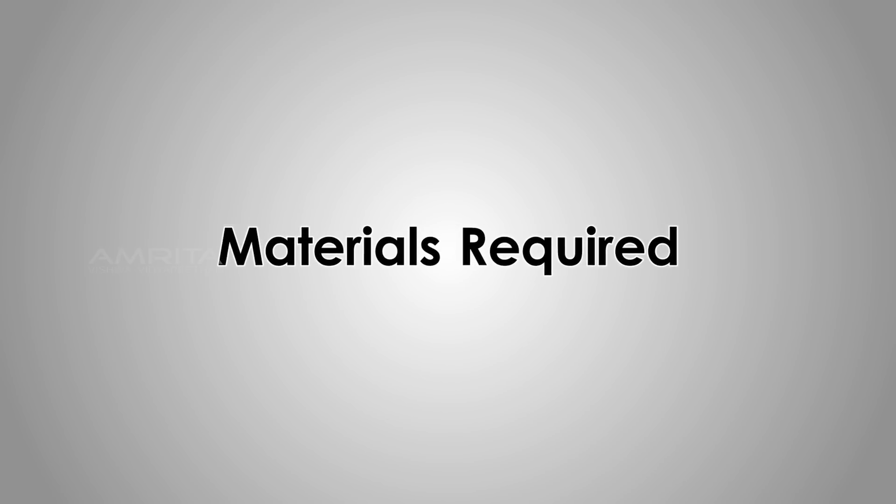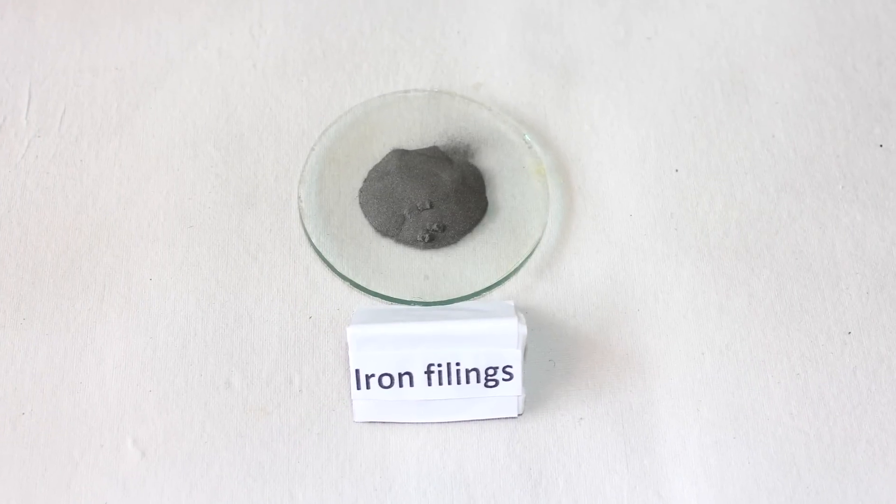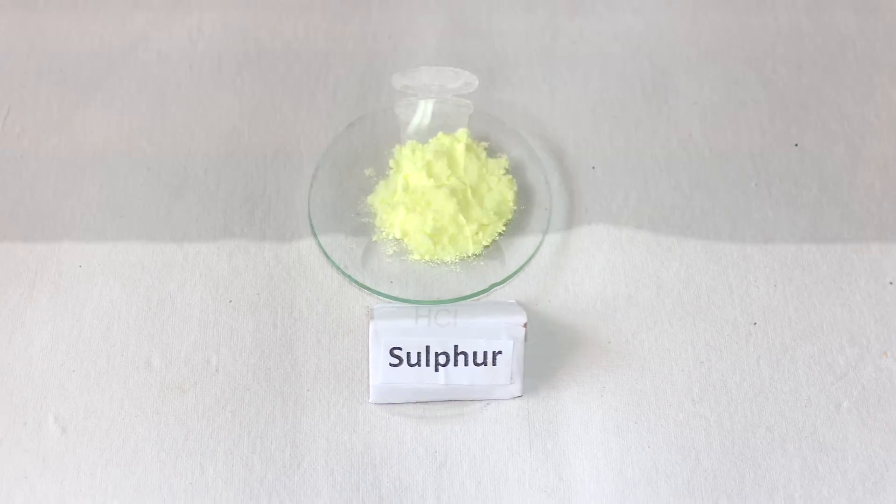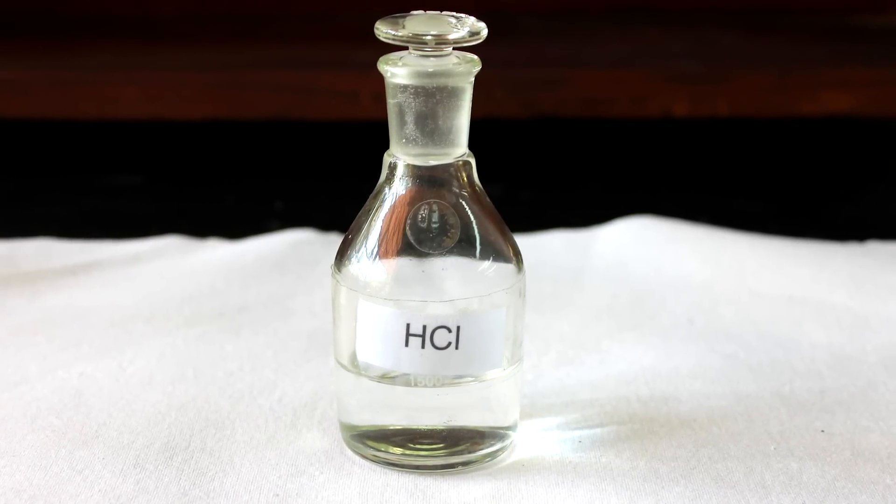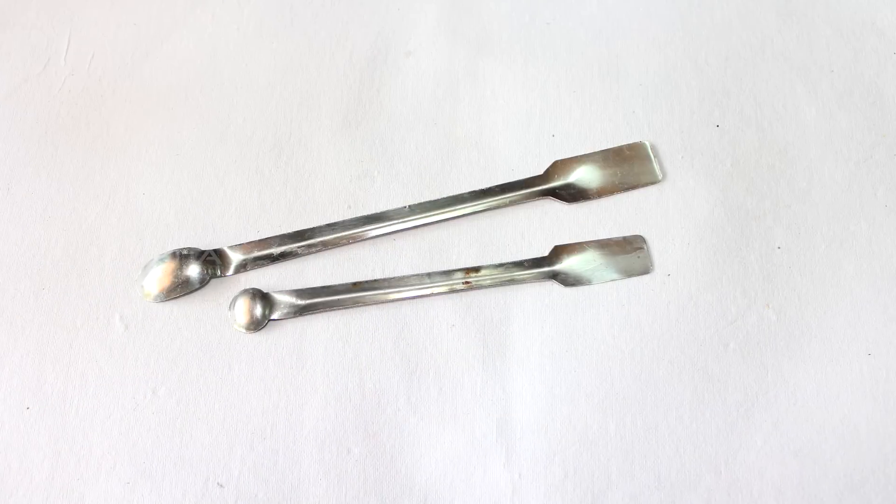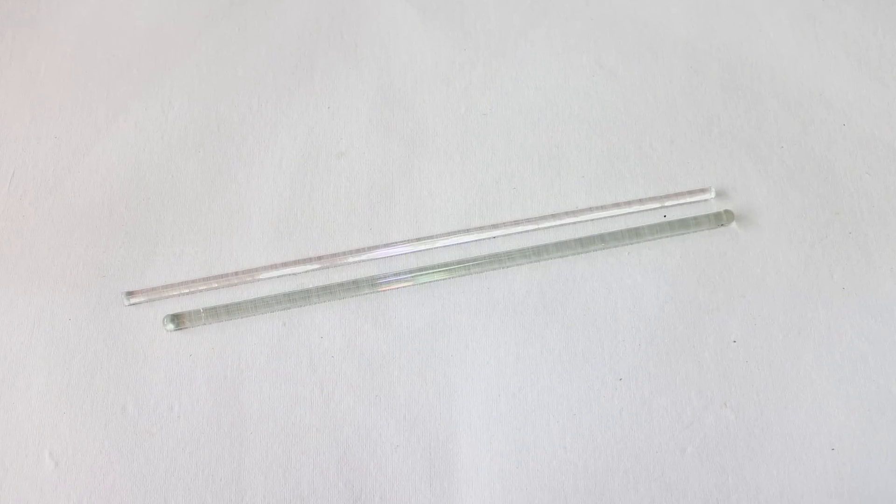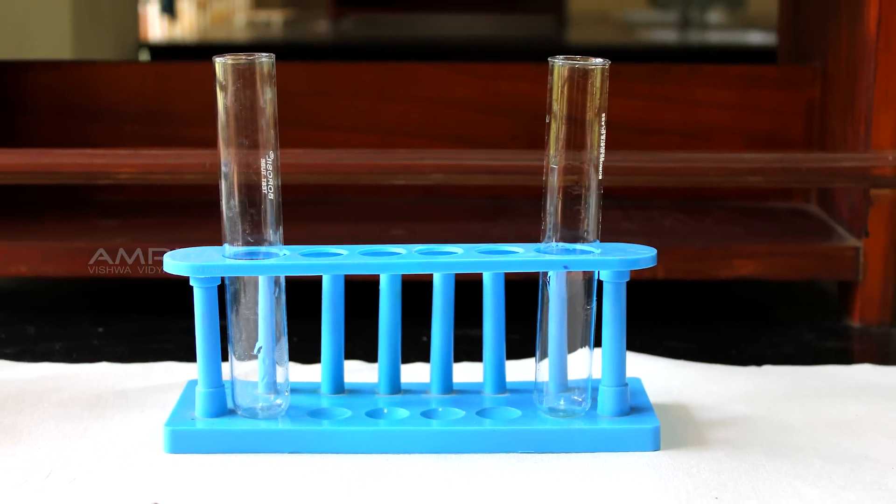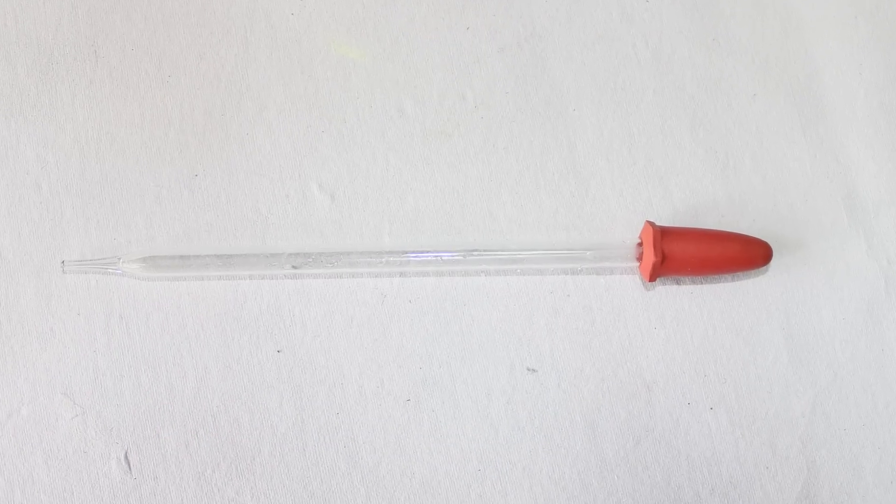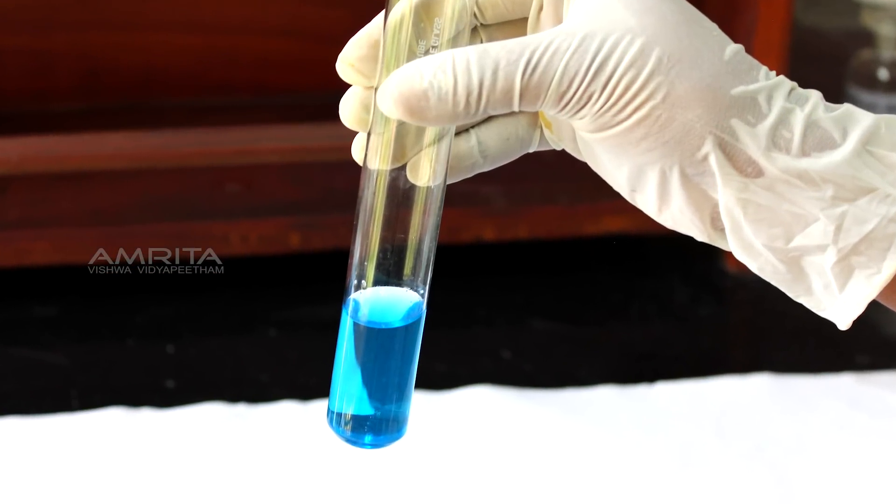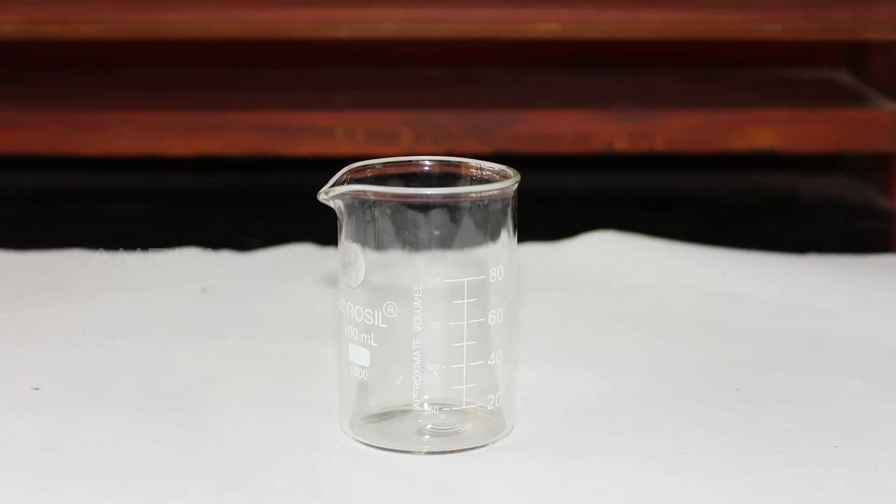Materials required: Iron filings, sulphur powder, dilute HCl, carbon disulphide, spatula, magnet, glass rods, boiling tubes, dropper, watch glass, aqueous solution of copper sulphate and a beaker.